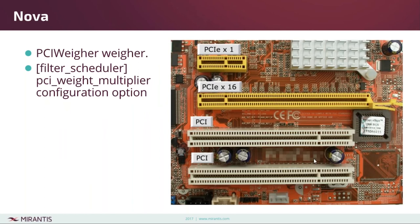Moving on from cells: if you have PCI-compliant hardware you probably have workloads you want to run on it. You can now use PCI weighting to make sure that workloads that don't need that hardware are scheduled elsewhere, freeing up that capacity for when you do need it. To make this work you need to use the PCI weight multiplier configuration option in the filter scheduler section of your Nova config file.